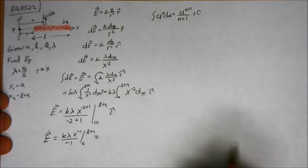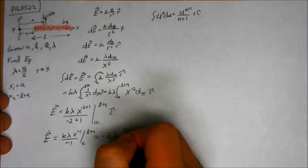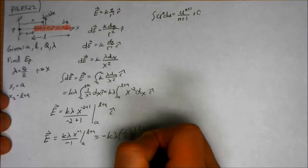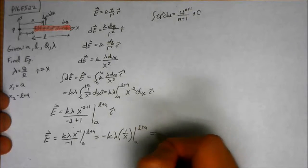Write this again. So negative K lambda 1 over x to A L plus A.